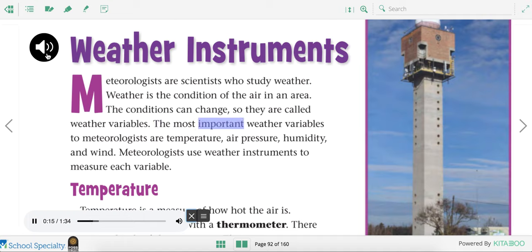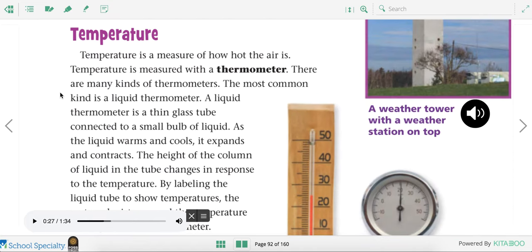The most important weather variables to meteorologists are temperature, air pressure, humidity, and wind. Meteorologists use weather instruments to measure each variable. A meteorologist is a scientist who studies the weather. Are you interested in studying the weather when you grow up? You could be a meteorologist.